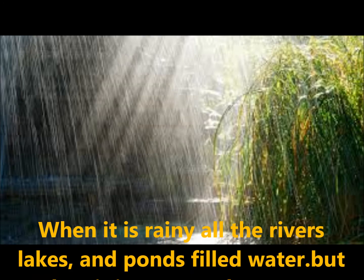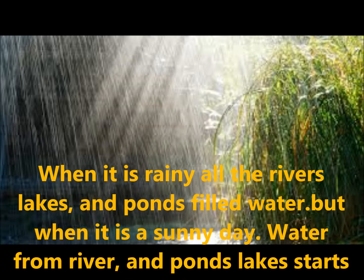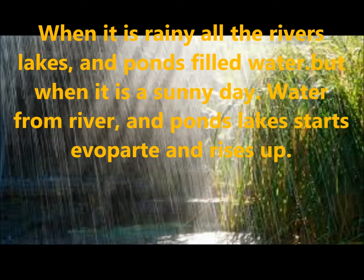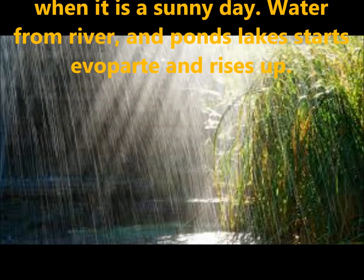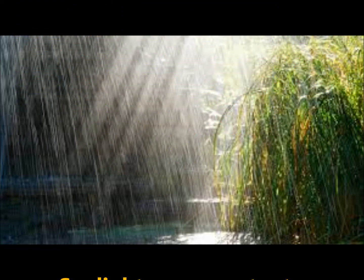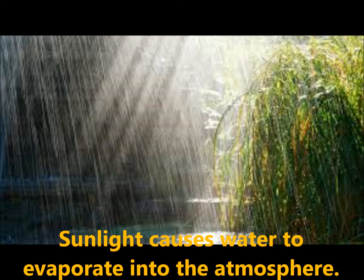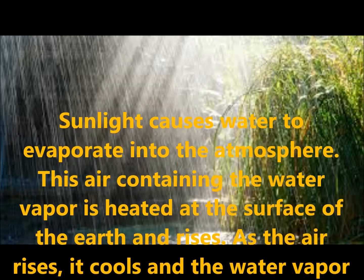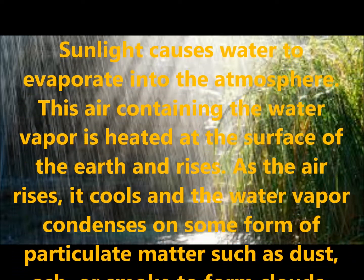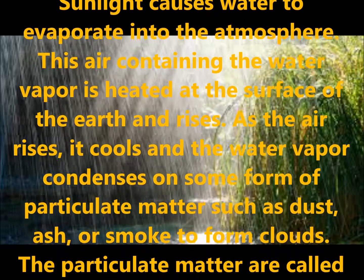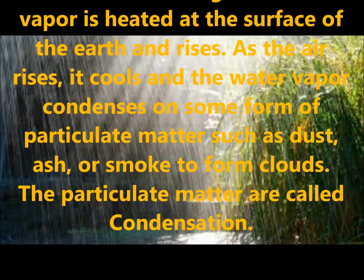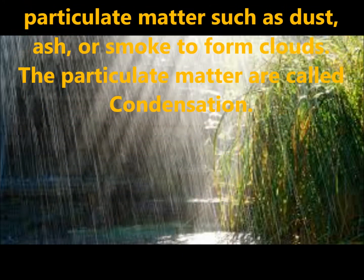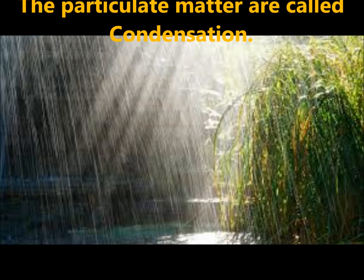When it rains, all the rivers, lakes and ponds fill with water. But on a sunny day, the water from rivers, lakes and ponds starts to evaporate and rises up. Sunlight causes water to evaporate into the atmosphere. The air containing the water vapor is heated at the surface of the earth and rises up. As the air rises, it cools and the water vapor condenses on particles such as dust, ash or smoke to form clouds. This particulate matter is called condensation.